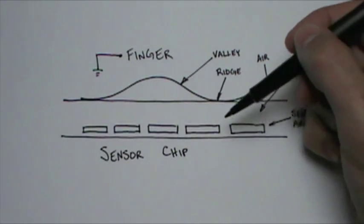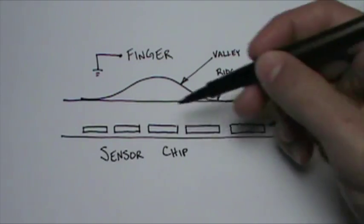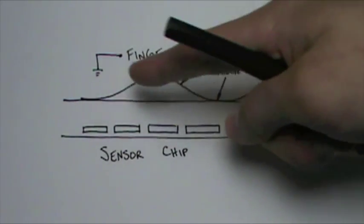On top of the sensor chip is a sensor array, just a bunch of little pieces of metal. On top of the sensor array is a piece of hard protective glass, and on top of the protective glass slides your finger.